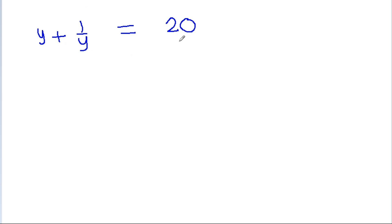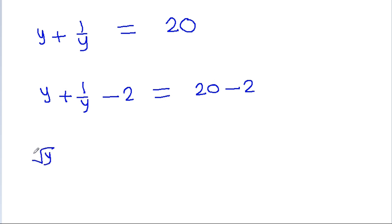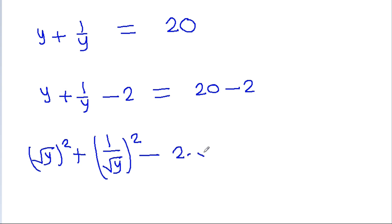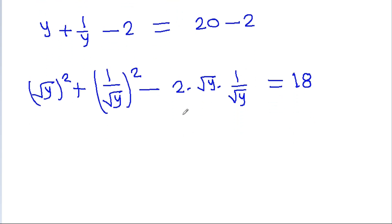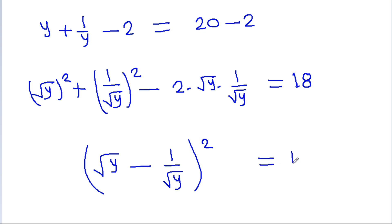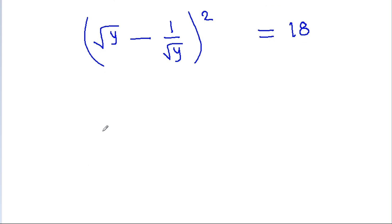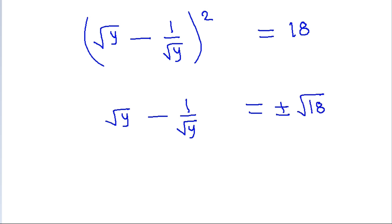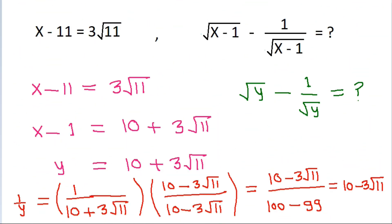If we subtract 2 from both sides, we get y plus 1 by y minus 2 is equal to 18. This is root y squared minus 2 times root y times 1 by root y plus 1 by root y squared, which equals 18. Using the identity a squared minus 2ab plus b squared equals a minus b whole squared, we get root y minus 1 by root y whole squared is equal to 18, so root y minus 1 by root y equals plus or minus root 18.